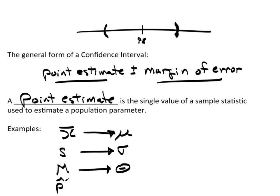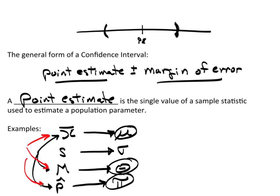P hat, sample proportion. That's used to estimate pi, the true proportion. We will actually work out confidence intervals for X bar, the median, and P hat. Actually, I said that wrong. We will work out confidence intervals for mu, theta, and pi, all based on X bar, M, and P hat.